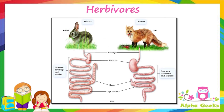Another important adaptation in herbivores is that they have longer small intestines as compared to carnivores, as digestion of cellulose takes a longer time. A longer intestine ensures that the food stays in the intestine for a longer period of time and is properly digested.